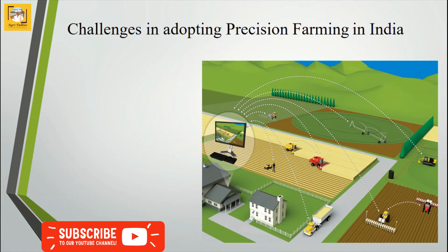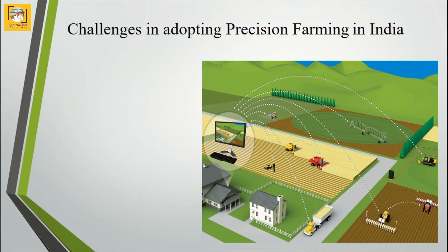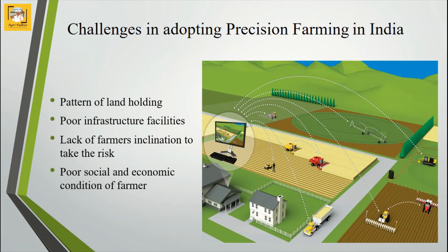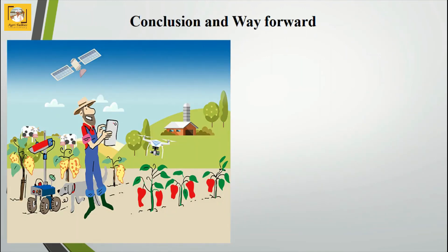Even though the technology is good and efficient, Indian farmers face challenges in adopting precision farming technologies. These include the pattern of land ownership — we know that Indian farmers are marginal and small farmers with fragmented lands, making it difficult to apply precision farming techniques. More research and modifications are required to adapt to these situations. There are also poor infrastructure facilities for sophisticated instruments and implements, lack of farmers' inclination to take risk, and poor social and economic conditions of the farmer.